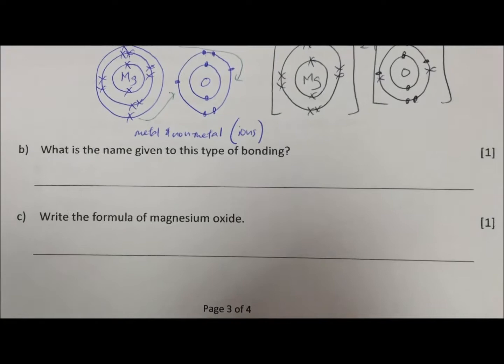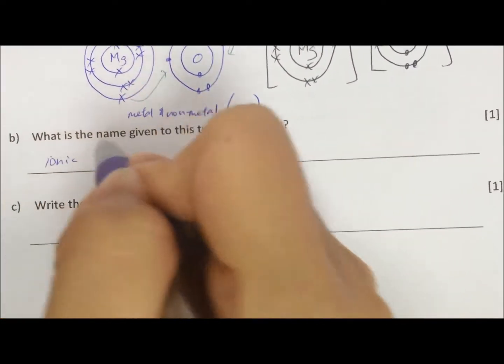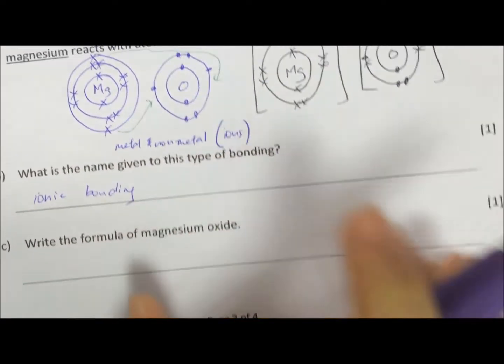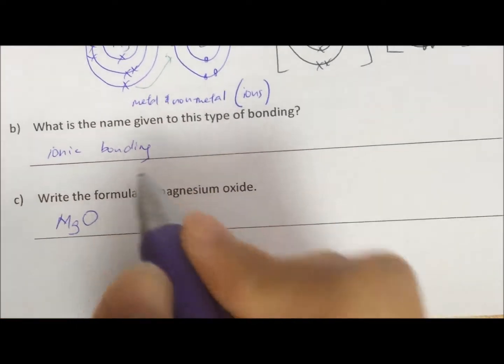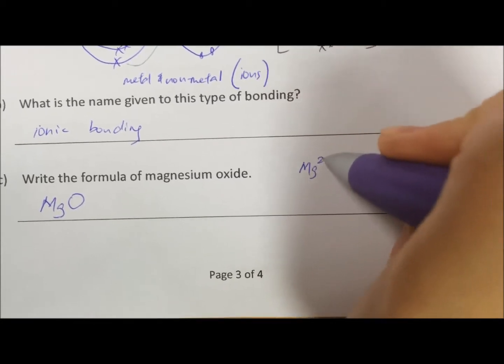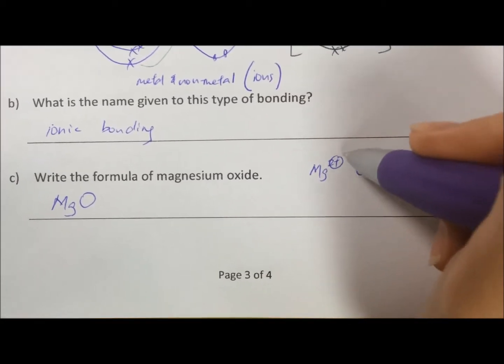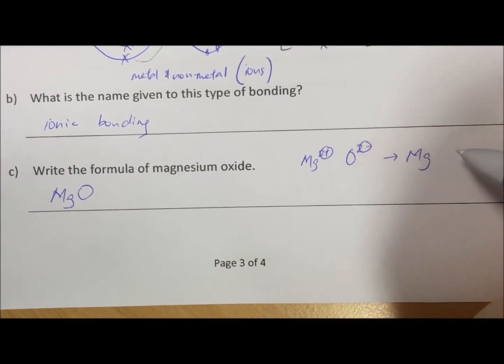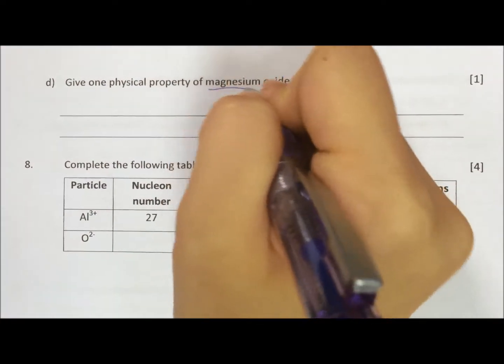Okay, so what is the name given to this type of bonding? We drew ions. Metal and non-metal is ionic bonding. Part C, write the formula of magnesium oxide. Since you drew 1 Mg and 1 O, it's simply MgO. If not, you can look at the periodic table. Mg is 2+, O is 2-. Charges are balanced. So because of that, you also get MgO. So that's the chemical formula of magnesium oxide.